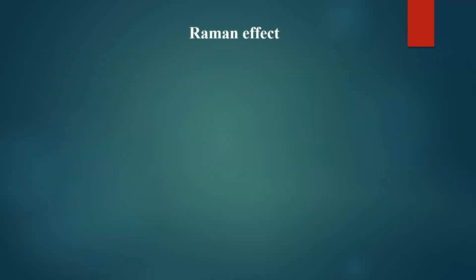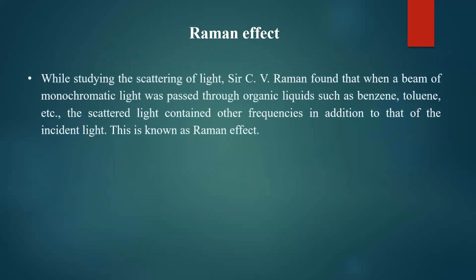A very good example of incoherent scattering is the Raman effect. This was discovered by C. V. Raman, an Indian scientist who received the Nobel Prize for this discovery. While studying scattering of light, Raman found that when a beam of monochromatic light is passed through organic liquids such as benzene or toluene, the scattered light contains other frequencies in addition to that of the incident light. This is called the Raman effect — new frequency or new wavelength of light is created because of this scattering, and that is incoherent scattering.